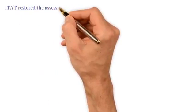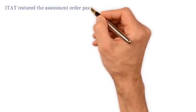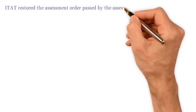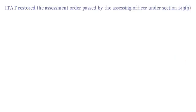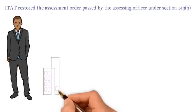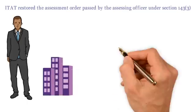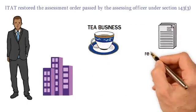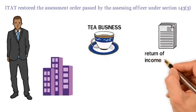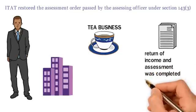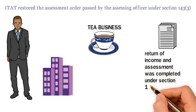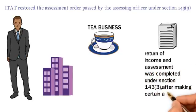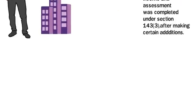ITAT restored the assessment order passed by the Assessing Officer under Section 143(3). The Assessee Company was in the T business. It filed its revised return of income and assessment was completed under Section 143(3) after making certain additions.